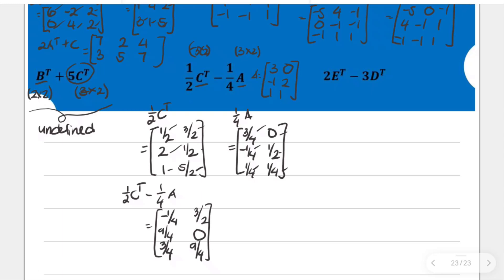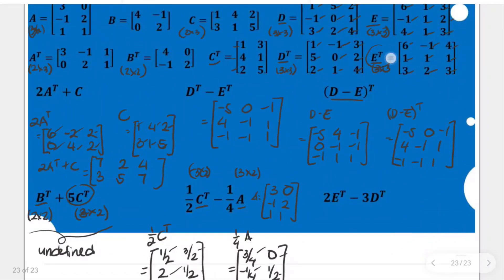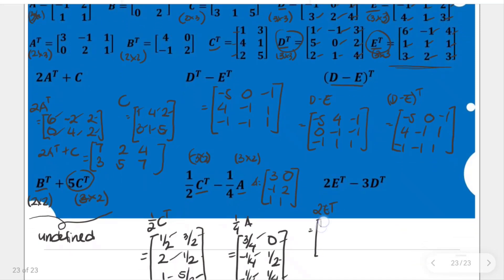For the last item, we already have the transpose of E and the transpose of D. Let's start with twice the transpose of E — simply multiply all entries by 2: 12, negative 2, 8, 2, 2, 2, 6, 4, 6. This is twice the transpose of E.